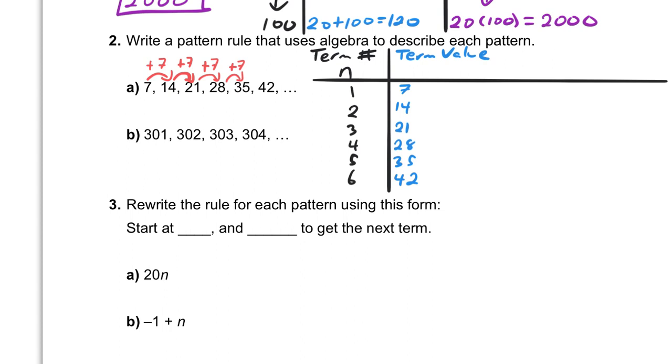One thing that the table of values can help you do is see the relationship between the n and the value. So if you know your 7 times tables really well, you can see that 1 times 7 is 7, and 2 times 7 is 14, and 3 times 7 would give you 21. So this means that the term value is just 7 times the number, right? Whatever this number is, you multiply it by 7, and you will get your term value.